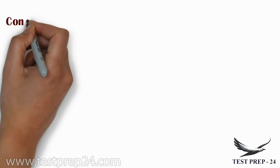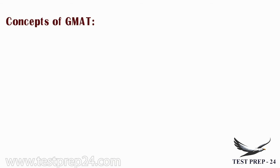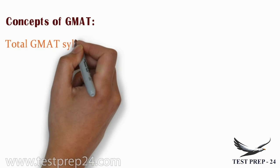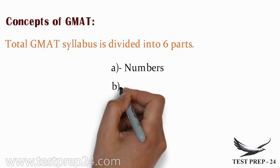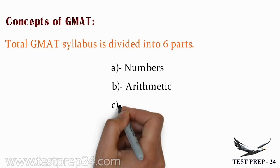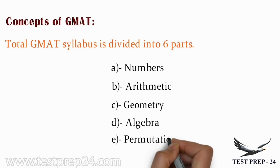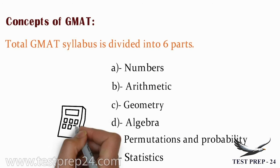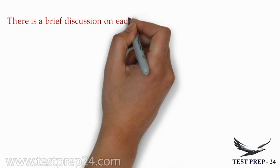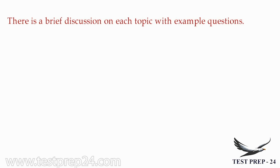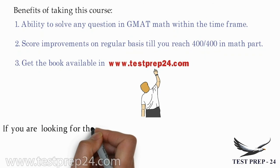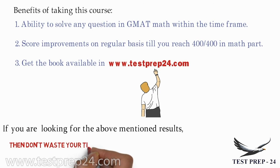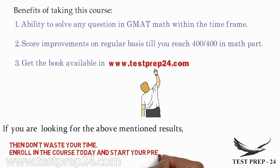Moving to the third part — the concepts you are going to learn for GMAT. The syllabus is divided into six parts: numbers, arithmetic, geometry, algebra, permutations and probability, and statistics. There is a brief discussion on each topic with examples. If your target is to improve your score, don't waste your time — just enroll in this course and start your preparation today. Thank you.